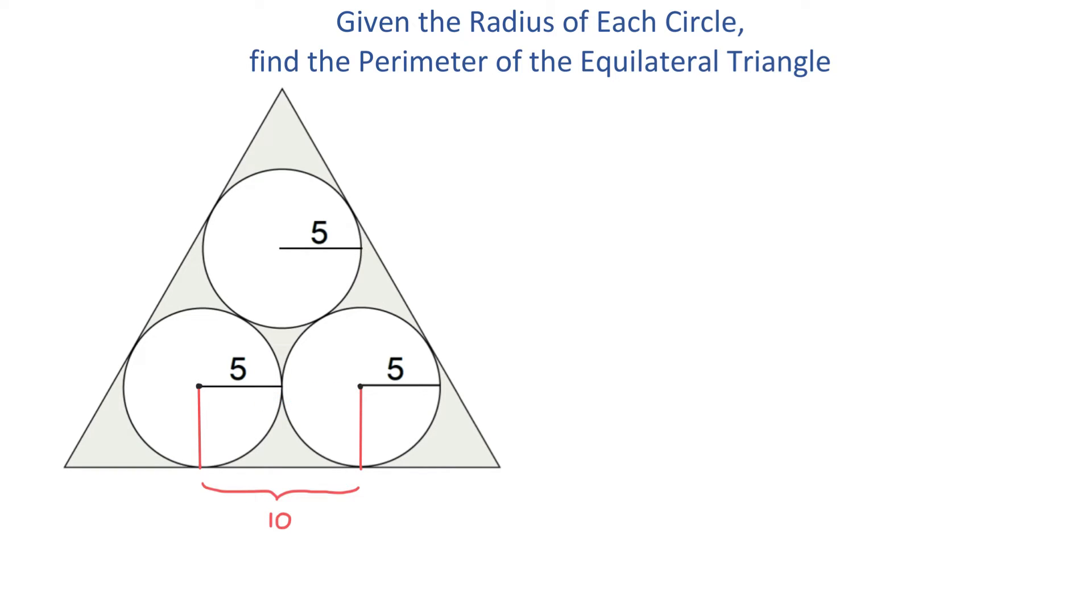To find the length of this perpendicular segment, we will connect the center of the circle with the vertex of the triangle. This forms a right triangle.